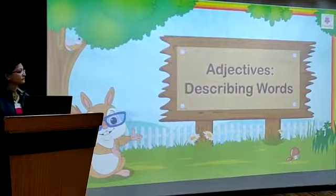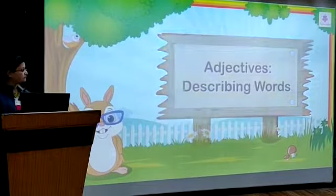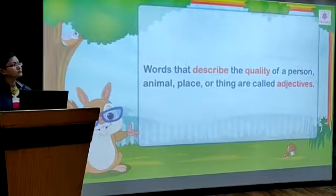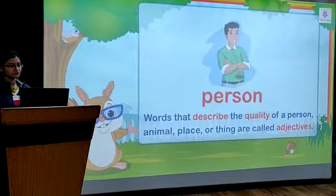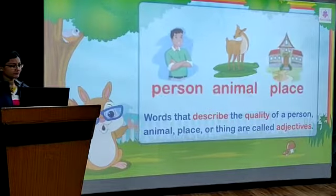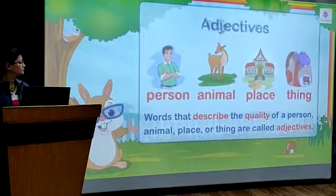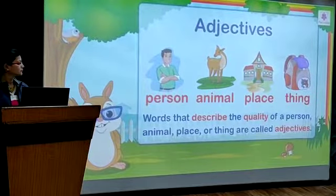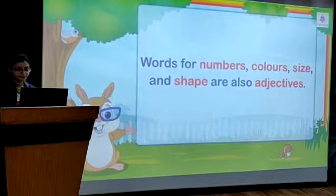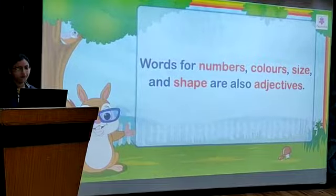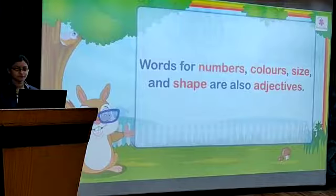Adjectives — describing words. Words that describe the quality of a person, animal, place or thing are called adjectives. Words for numbers, colours, size and shape are also adjectives.